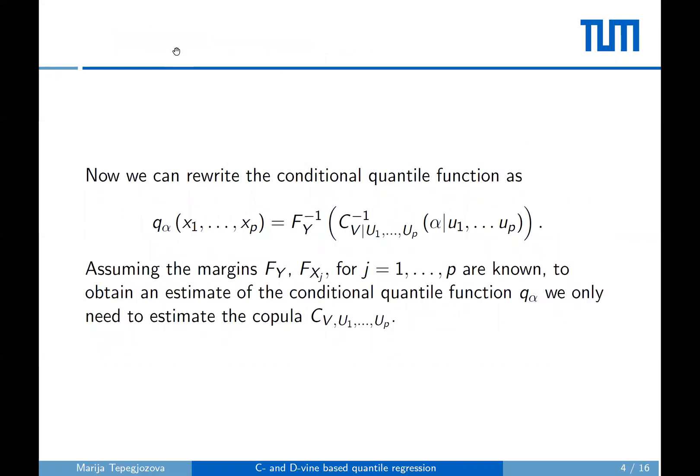With the scaled variables we can now rewrite the conditional quantile function as the composition of the inverses of the marginal distribution of the response and the conditional distribution function of the response given the predictors. Note that in this case the conditional distribution function is arising from a p+1 dimensional copula corresponding to the joint distribution of the response and the predictors. Assuming the margins are known or estimated, the only remaining thing is to estimate the copula corresponding to the joint distribution of the response and the predictors.